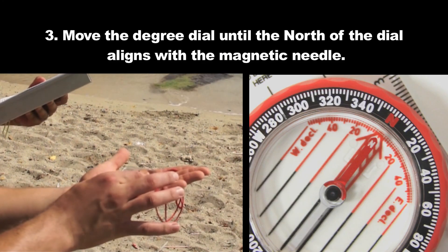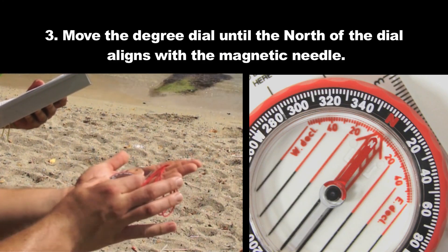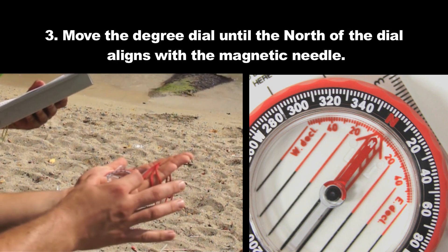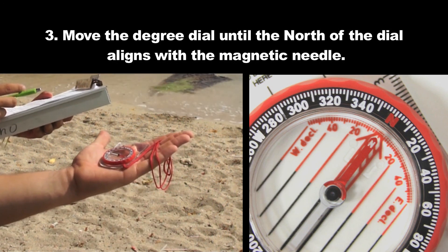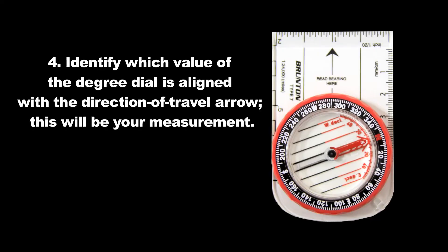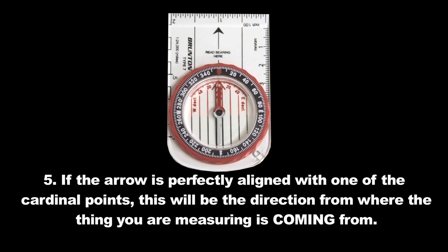Once the direction of travel arrow is in the correct position, move the degree dial until the north of the dial coincides with the magnetic needle. Step 14: Identify which value of the degree dial is aligned to the direction of travel arrow — this will be your measurement. Step 15: If the arrow is perfectly aligned with one of the cardinal points, this will be the direction from where the thing you are measuring is coming from, meaning waves or wind — for example, north, south, east, or west.